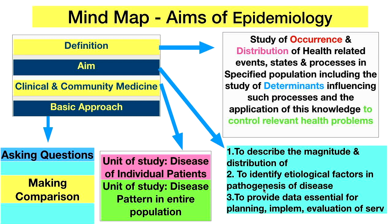The aims of epidemiology are: to describe the magnitude and distribution of the problem, to identify etiological factors in the pathogenesis of disease, and to provide data essential for planning, implementation, and evaluation of services for control of health problems. The basic difference between clinical and community medicine is that in clinical medicine the unit of study is the individual patient, whereas in community medicine the unit of study is the disease pattern in the entire population.